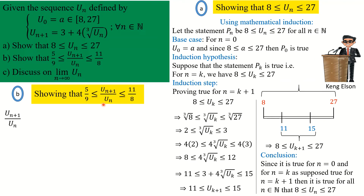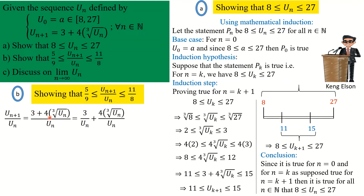Part (b) is also very technical, so pay close attention — if you miss one step, you're lost. We begin by obtaining the expression for u_{n+1}/u_n. We have u_{n+1} = 3 + 4·∛(u_n), so: u_{n+1}/u_n = (3 + 4·∛(u_n)) / u_n. Separating the fraction, this equals 3/u_n + 4·∛(u_n)/u_n.